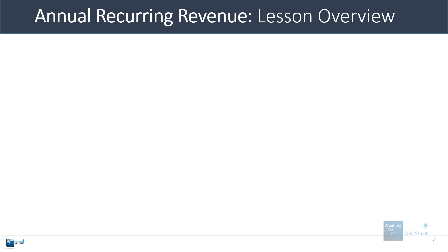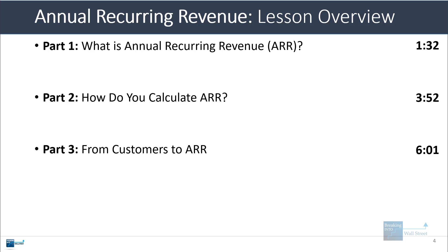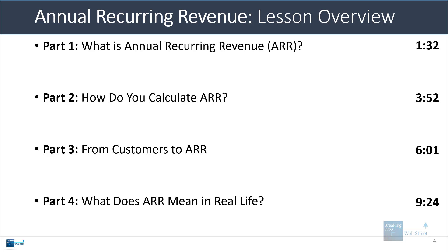In this lesson we're going to cover four main topics. First, I'll describe what annual recurring revenue actually is and show you a quick example. Then we'll go into the calculations with another example and some subtleties with real companies. Then I'll show how for a smaller company or startup with customer level information you can go from customer revenue information to the annual or annualized recurring revenue. In part four we'll discuss what ARR actually means in real life and whether it is the most important SaaS metric or whether people overrate its importance.